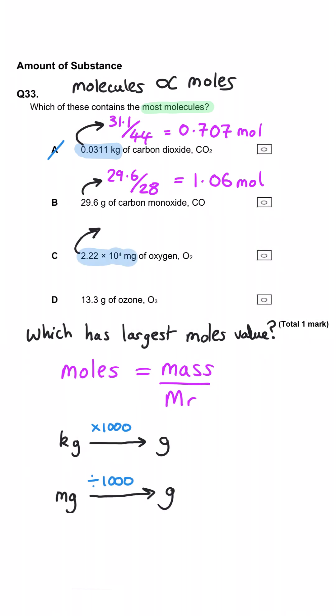Then for C, we've got 2.22 times 10 to the 4 milligrams of oxygen, which we then need to divide by 1000 to turn it into grams of oxygen, which gets us 22.2 grams. We divide that by the MR of oxygen, which is 32. And in fact, we don't even need to calculate this because we can tell from the fraction it's going to be less than 1.